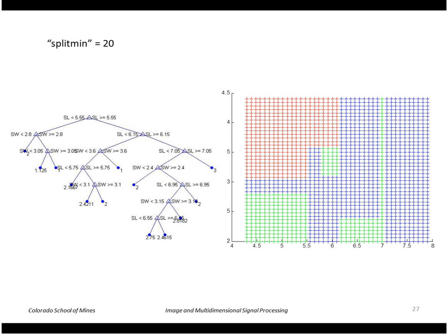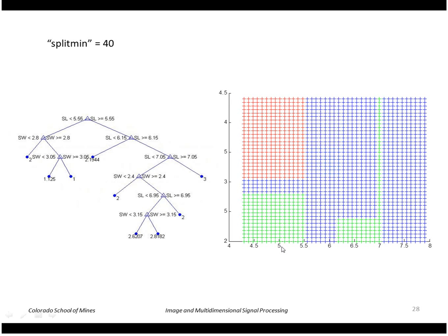This has split_min of 20, so we wind up with a simpler tree and a simpler divvying up of the input feature space. Here is split_min of 40, which is even simpler.